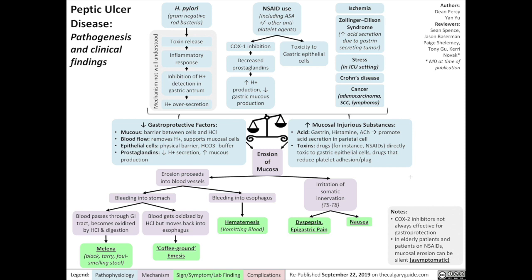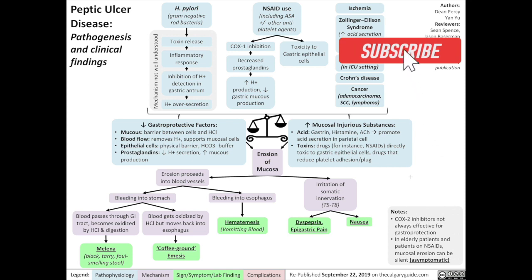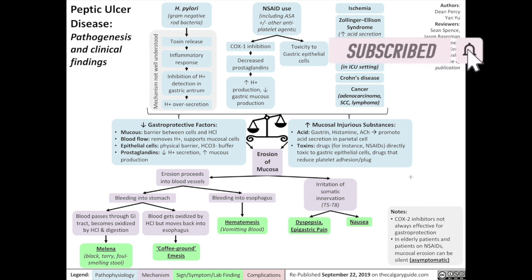And that's it for an overview of the pathogenesis and clinical findings of peptic ulcer disease. If you found this quick and concise summary useful, please consider liking this video and subscribing to the channel for more summaries about pathophysiology from the Calgary Guide to Understanding Disease. Thanks everybody, and see you in the next video.